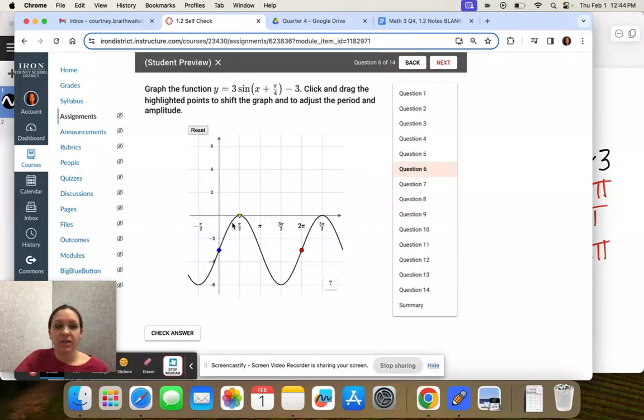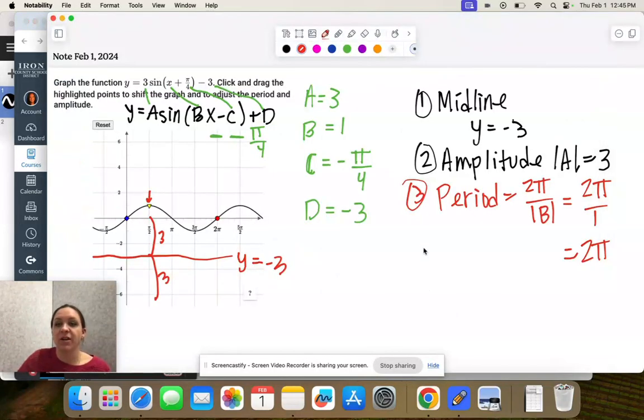Let's just check. Yes. So we're going from 0, and before our graph repeats itself, we're at 2π. So the length of the period is 2π. We don't have to change anything for that one.